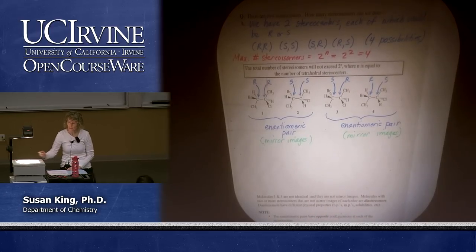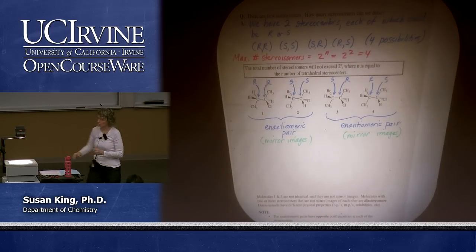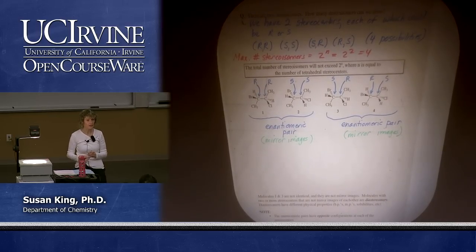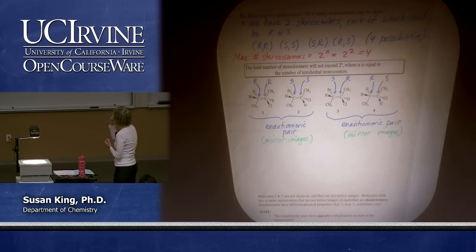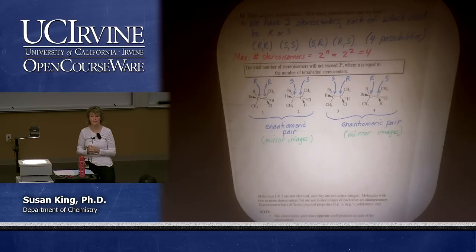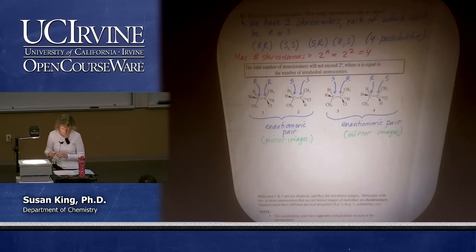Notice what's happening when we go from 1 to 2. We change configuration at the first stereocenter and we change configuration at the second. Going from 3 to 4 we also change configuration on the left and on the right. So if you have two stereocenters and you change configuration at both of those stereocenters you'll have the mirror image.